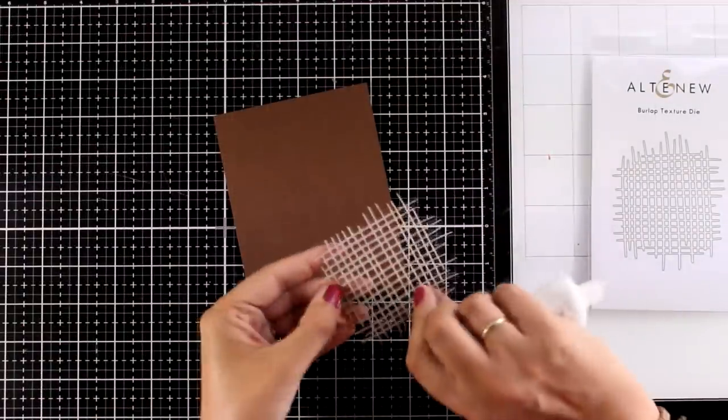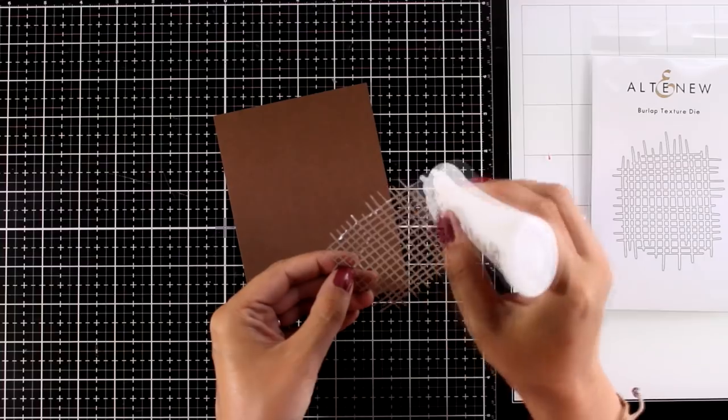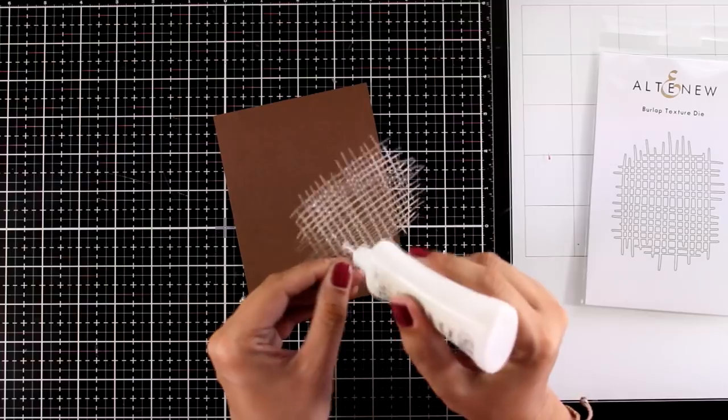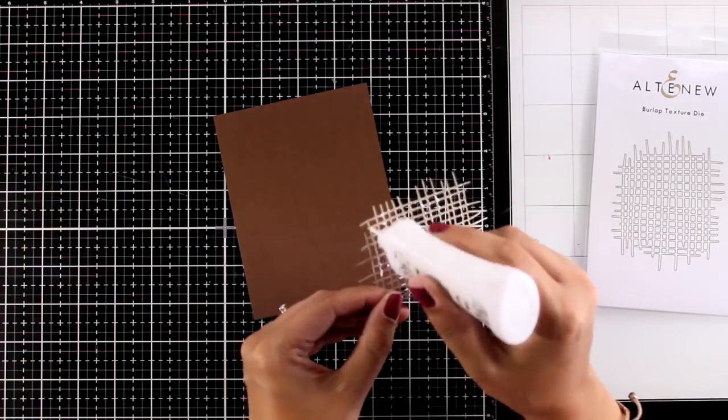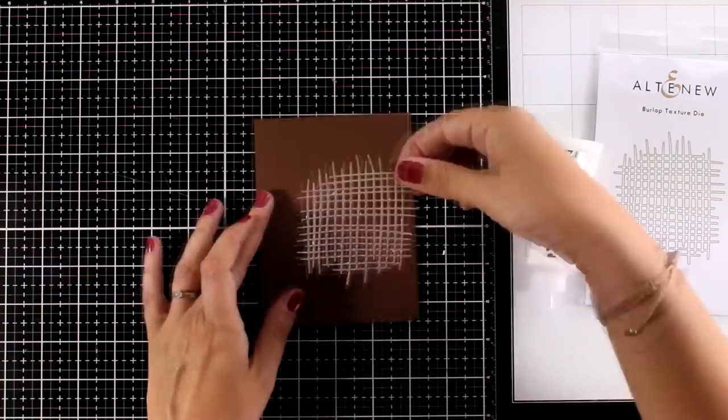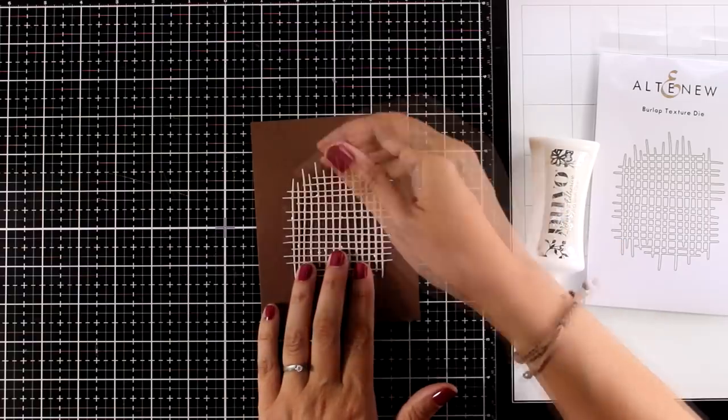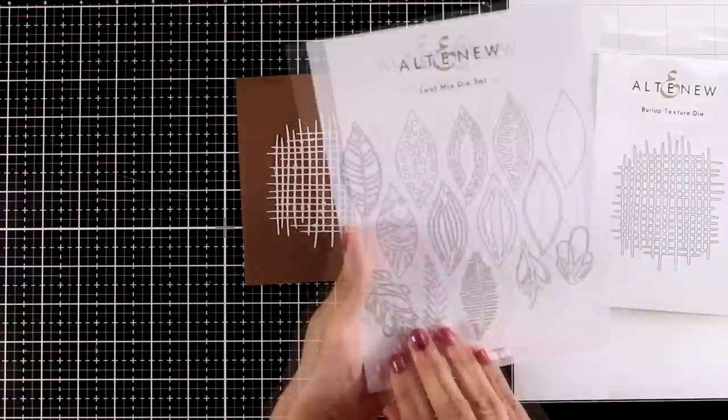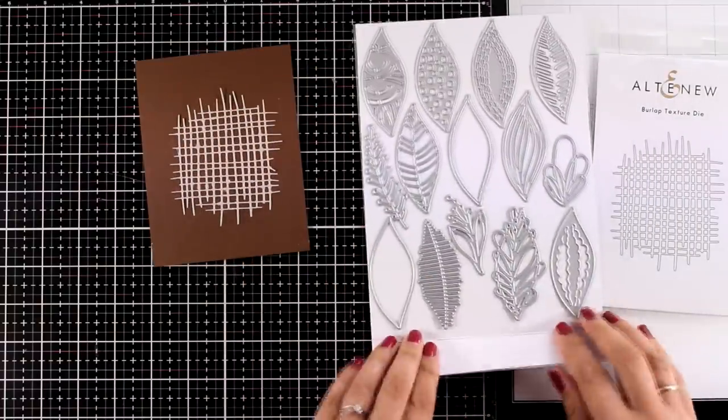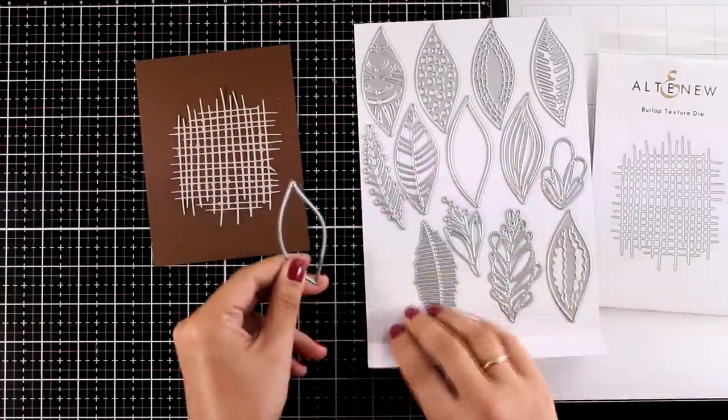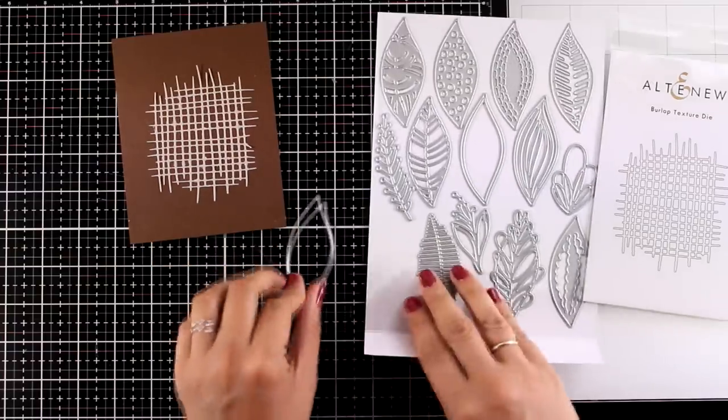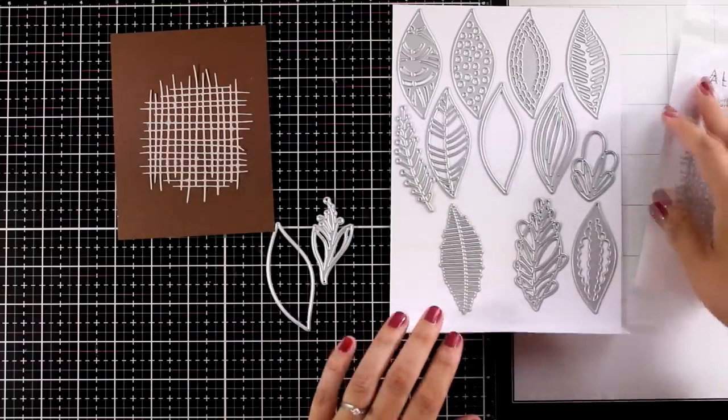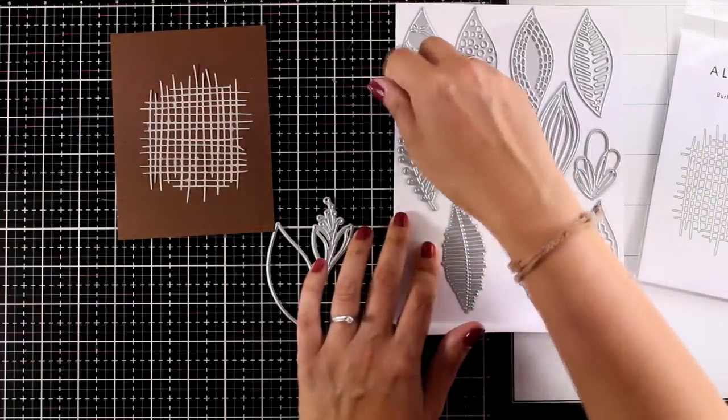This is going to be a card with fall colors and I'm going to use the burlap. I just die cut it from craft cardstock and I'm going to add some glue at the back and stick it on top of my brown card base. This is a four and a quarter by five and a half panel. And I'm going to bring in some dies from the leaf mix die set. I'm going to use the basic shape of the leaf and a couple more decorative dies. I always like to have three elements as my focal points. That's why I'm going to use three dies.